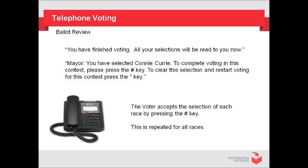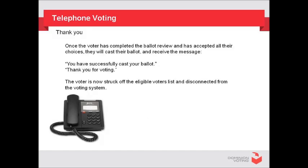In the ballot review, you will hear the following message: 'You have finished voting. All your selections will be read to you now. Mayor: you have selected Connie Curry. To complete voting in this contest, press the pound key. To clear this selection and restart voting for this contest, press the star key.' The voter accepts the selection of each race by pressing the pound key. This is repeated for all races.